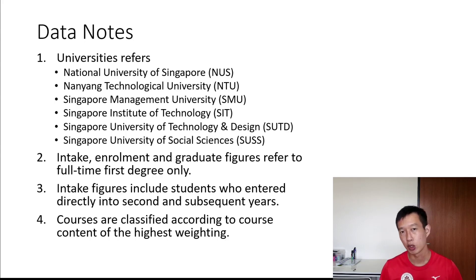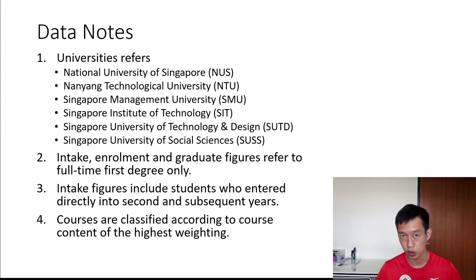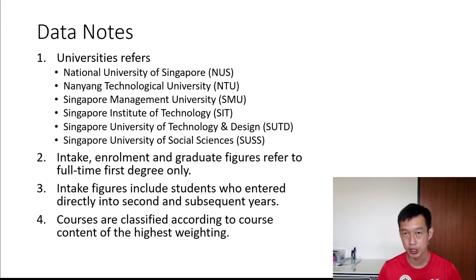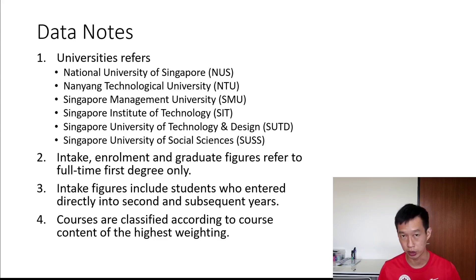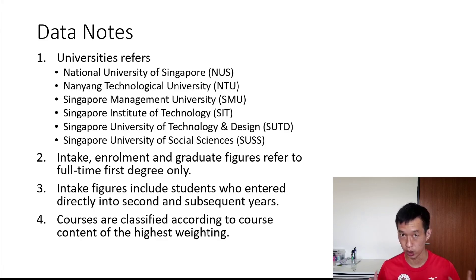Here are some accompanying data notes that came with the dataset. The university data comes from six local universities: NUS, NTU, SMU — the big three — as well as SIT, SUTD, and SUSS. So it's quite a big chunk of data.